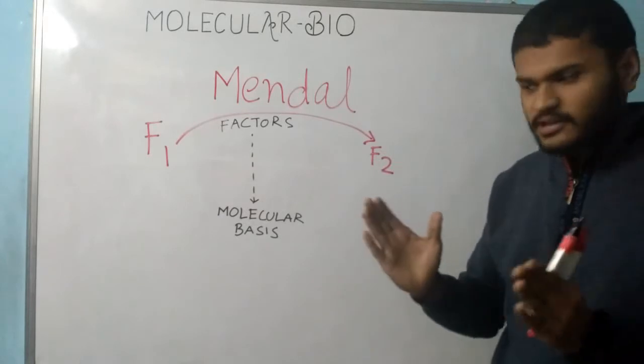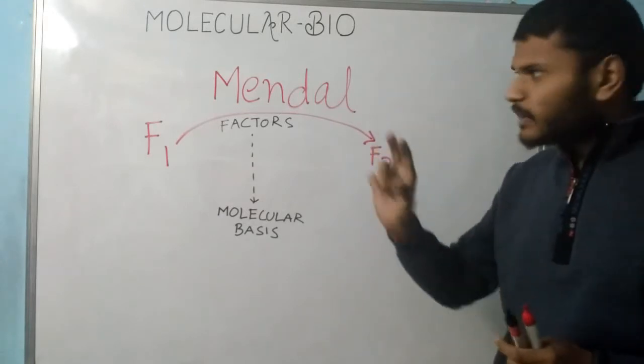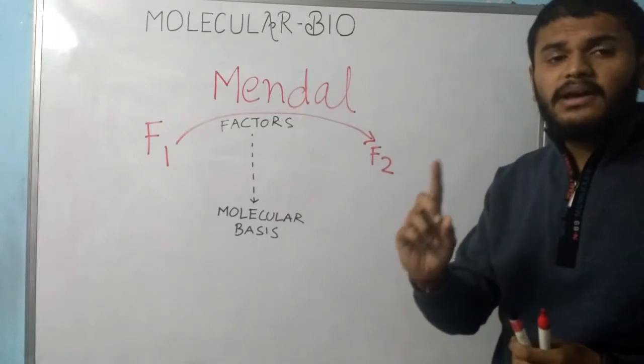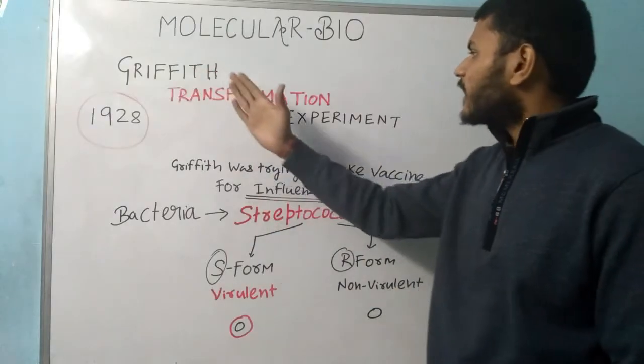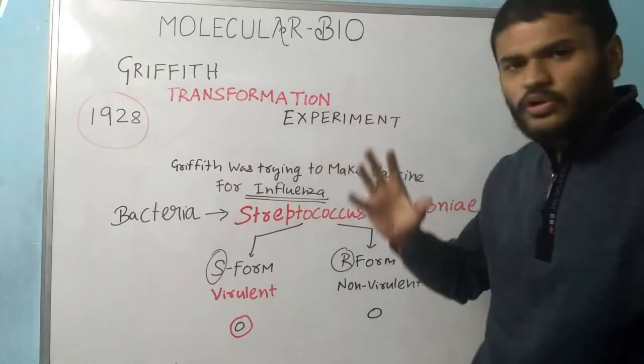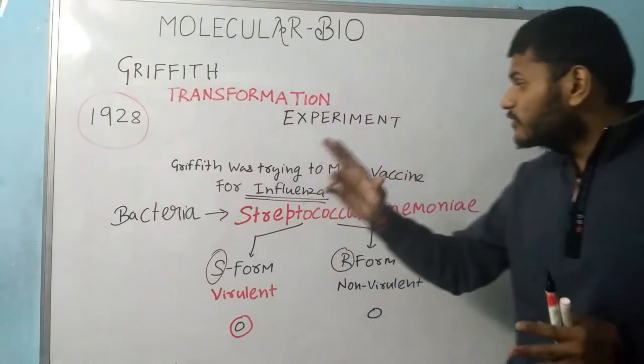In this chapter we start with Mendel, and after Mendel is the transformation experiment given by Griffith in 1928. Griffith was trying to make a vaccine for a disease known as influenza which is caused by bacteria known as Streptococcus pneumoniae.